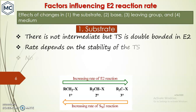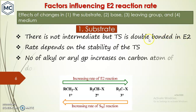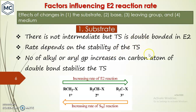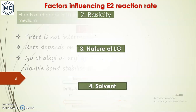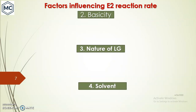In E2, we have to consider the transition state, which has double-bond character. The rate depends on the stability of the transition state. When the number of alkyl or aryl groups increases, electronic effects stabilize the transition state, so tertiary substrates give the most stabilized transition state and fastest rate.